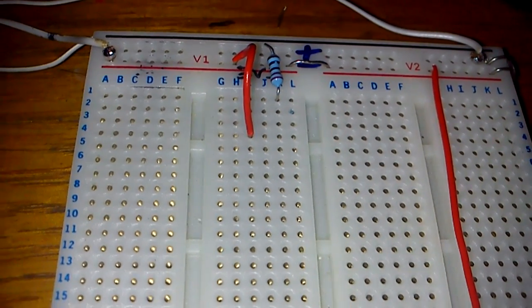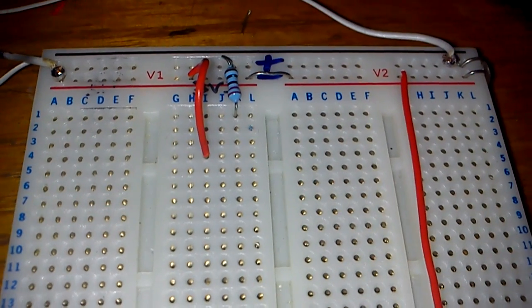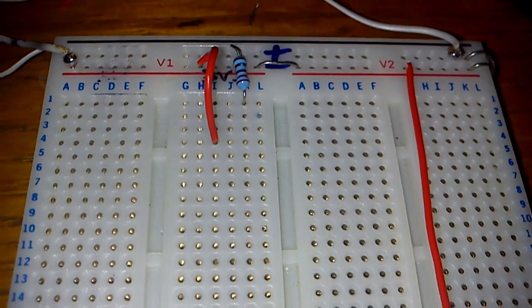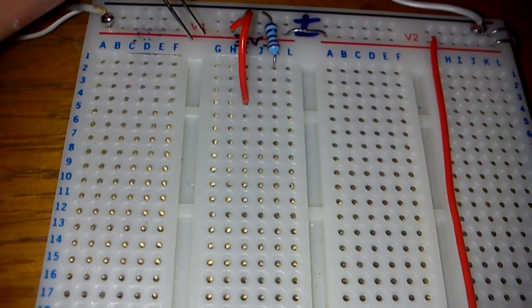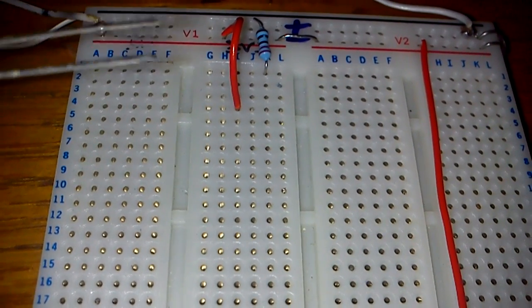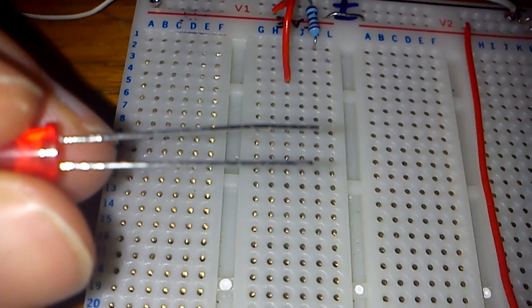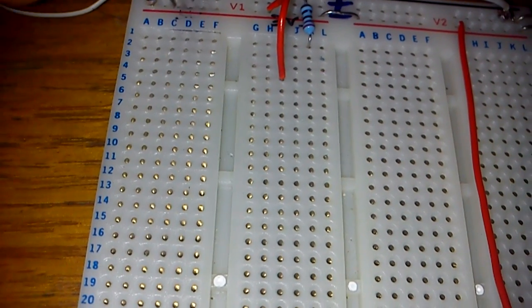So all I'm doing at the moment is drawing power from the 3.3 and the ground, and I'm going to take this LED and plug it in. Now the long pin is positive and the short pin is negative.